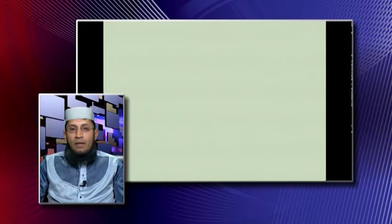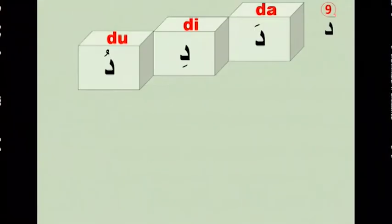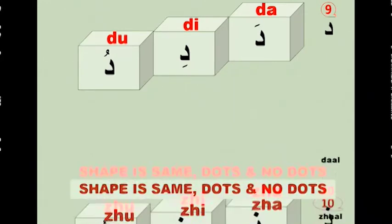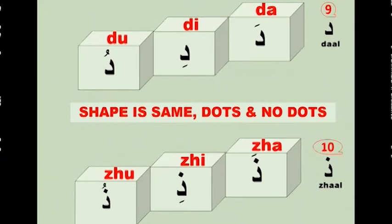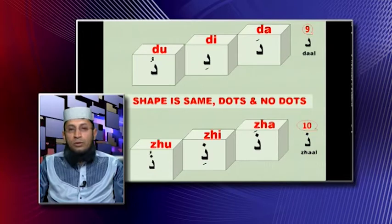Moving on to letter number nine, which is Dal. And letter number ten, which is the last letter for today, is the letter Dhal. We say Da for Fatha, Dhi for Kasra, and Dhu for Dhamma. So these are the ten letters carrying the three short vowels — A, E, U — which we learned for today.